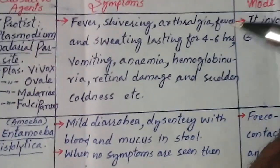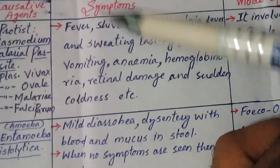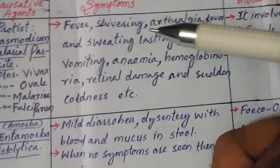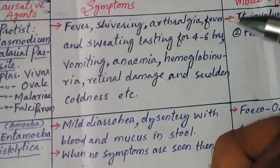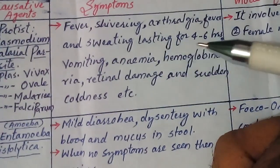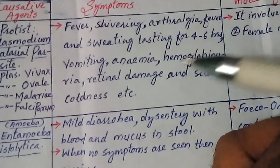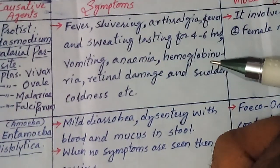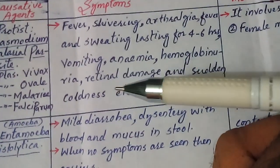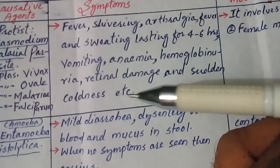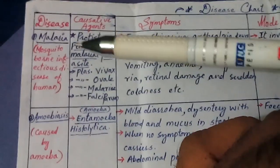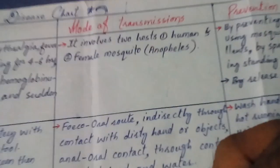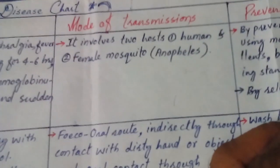The symptoms of malaria involve fever, shivering, arthralgia (joint pains), fever and sweating lasting four to six hours, vomiting, anemia, hemoglobinuria, retinal damage, and sudden coldness. These are the symptoms of malaria disease.